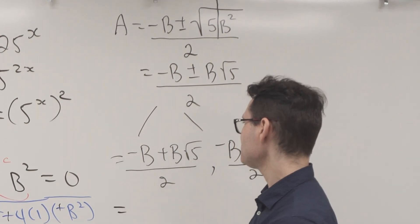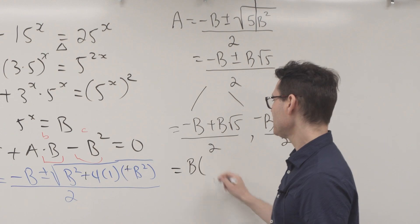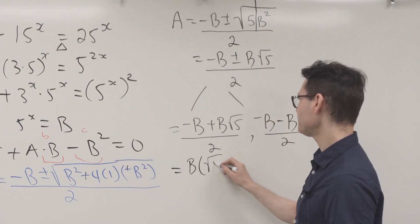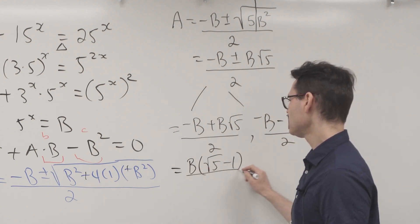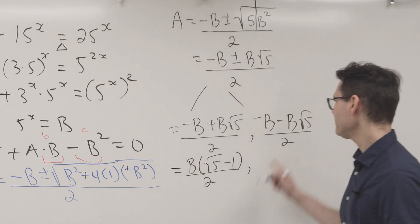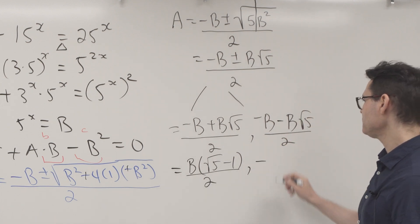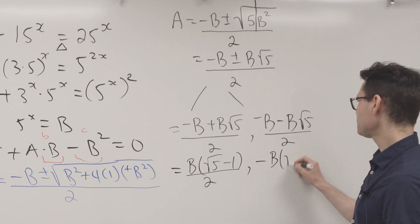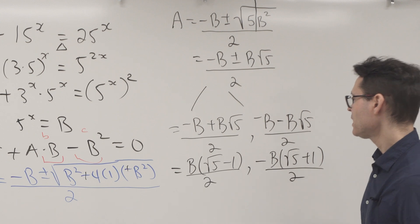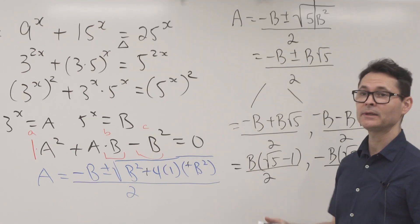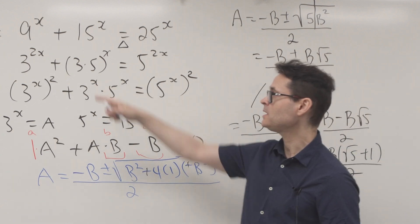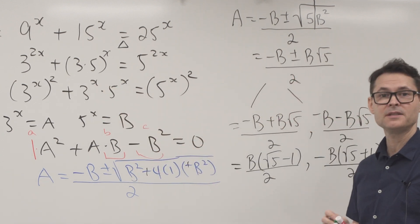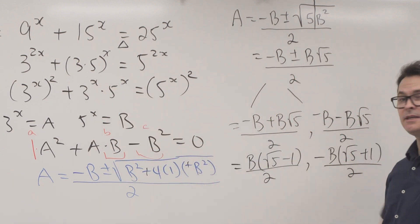Factoring out B: the first becomes B(√5 - 1) / 2, and the second becomes -B(√5 + 1) / 2. Both equal A. Now I have a relationship between 3^x and 5^x.